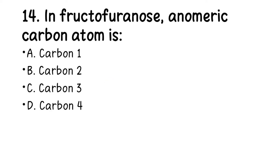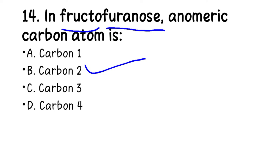Number 14. In fructofuranose, the anomeric carbon atom is: A. Carbon-1, B. Carbon-2, C. Carbon-3, D. Carbon-4. The right answer is carbon-2. Remember, fructofuranose refers to a cyclic sugar chain of five carbons — like a pentagon — while pyranose has six carbons.